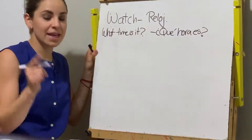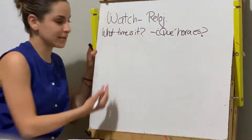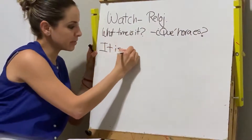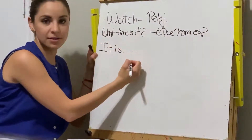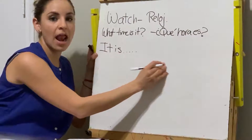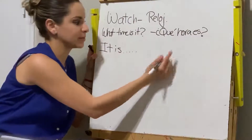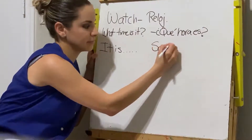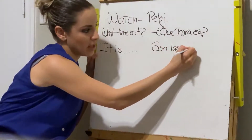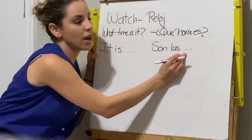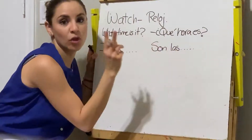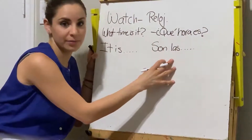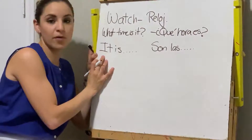When we say 'it is,' it means 'son las.' Son las dos. Son las cuatro. It is four. It is two.